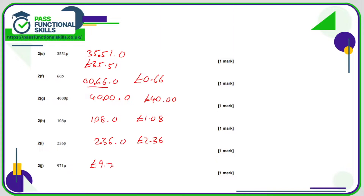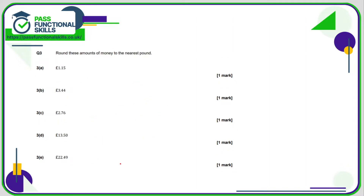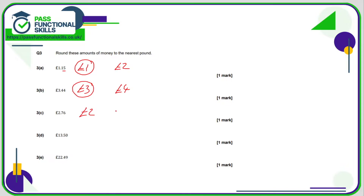Following the same pattern we get nine pounds seventy-one for J. Question three: rounding to the nearest pound. One pound fifteen is between one pound and two pounds; since 15 pence is less than 50 that's closer to one pound. £3.44 is between three and four pounds; 44 pence is less than 50 so we round down to three pounds. Two pounds seventy-six: 76p is greater than 50 so we round up to three pounds.